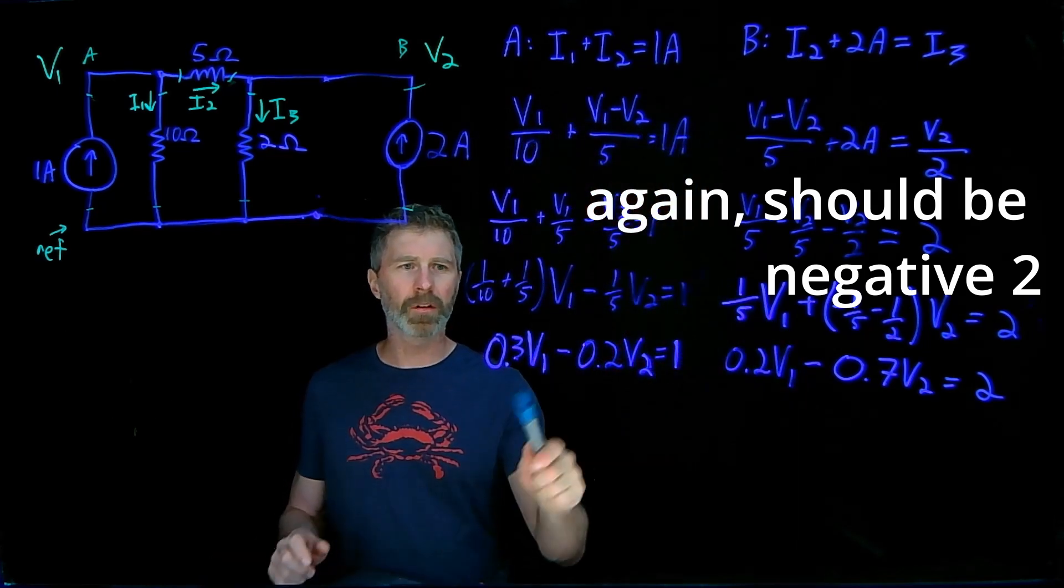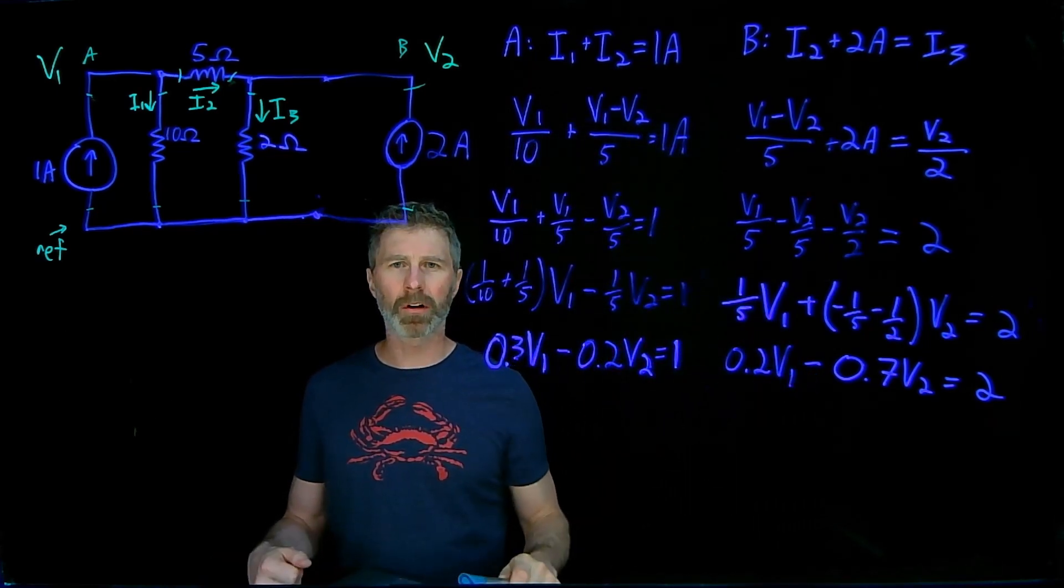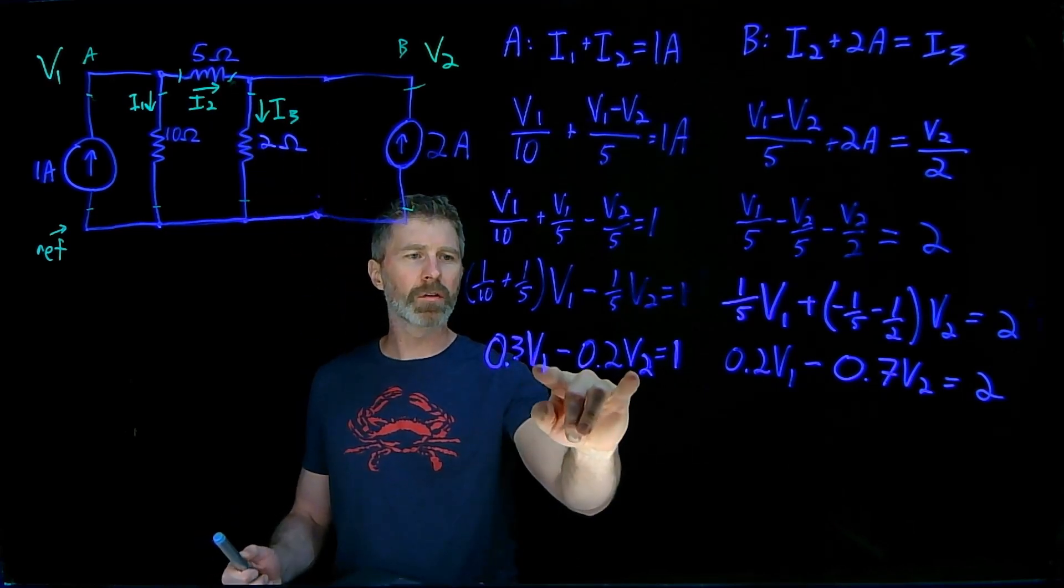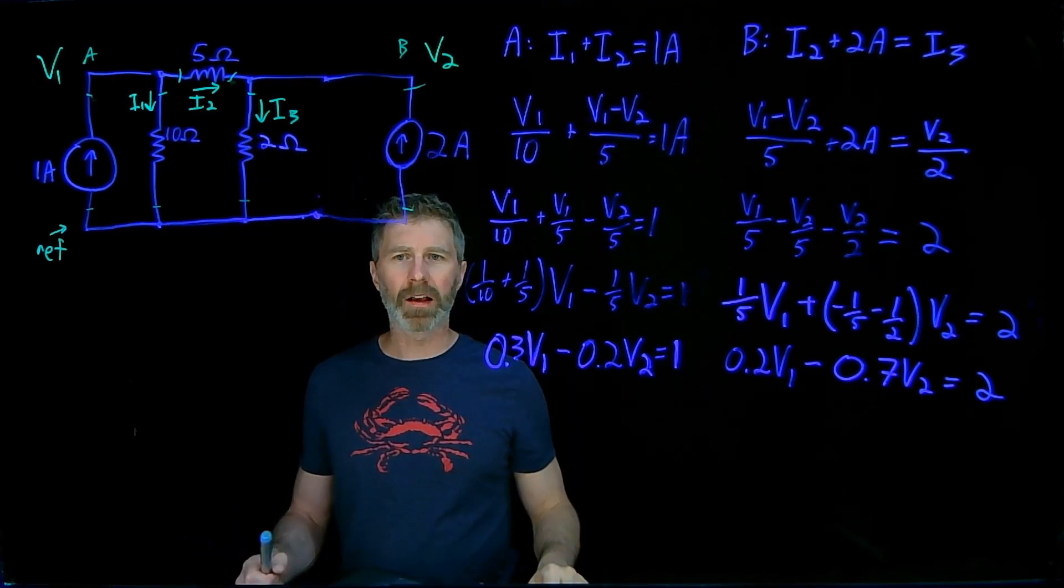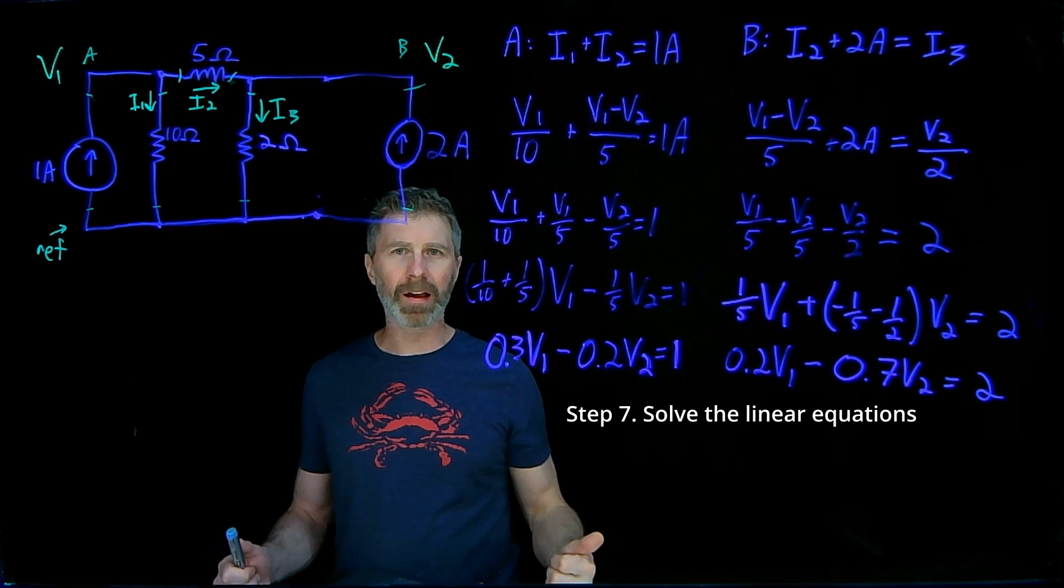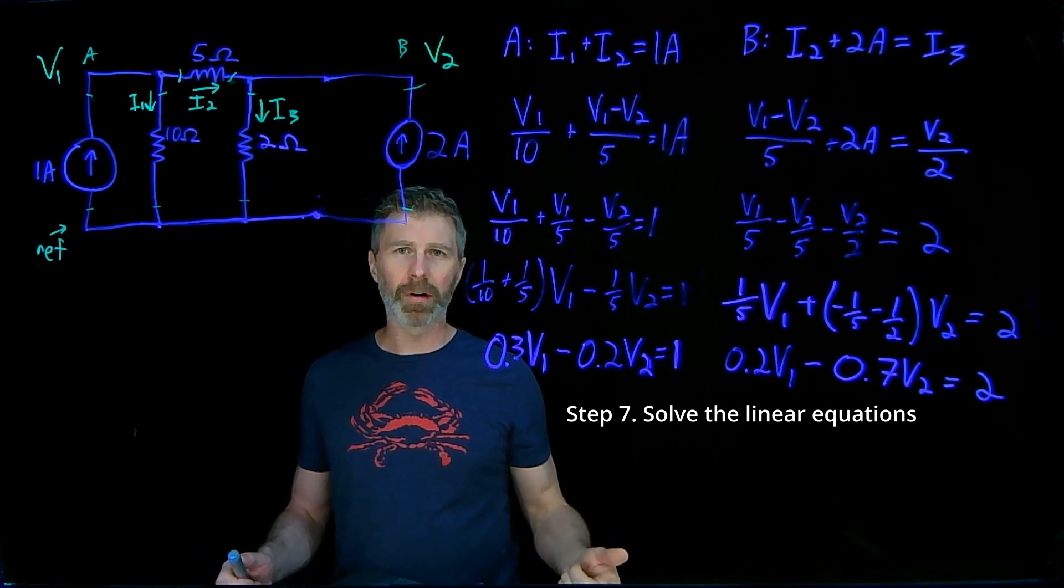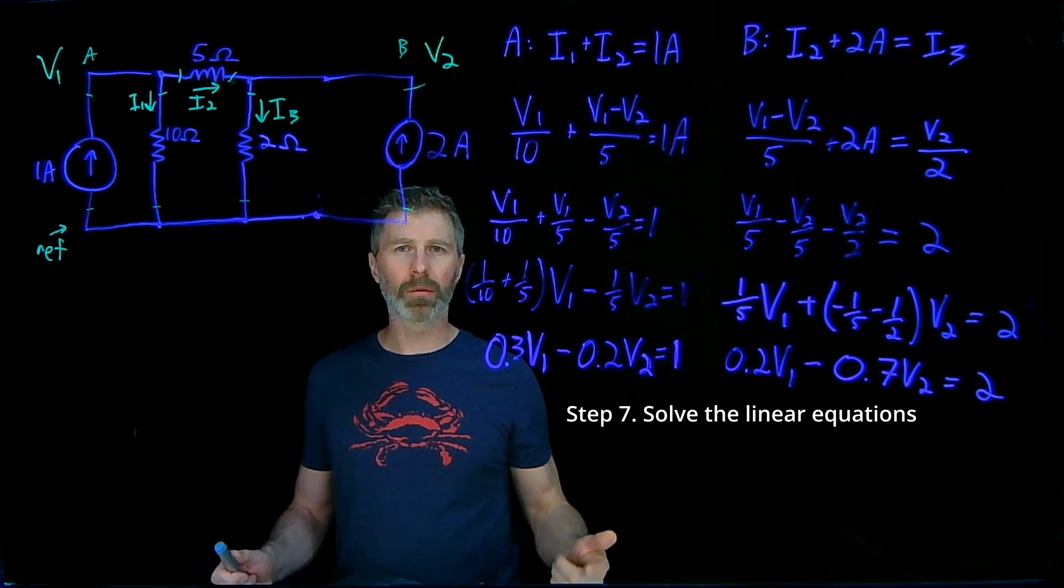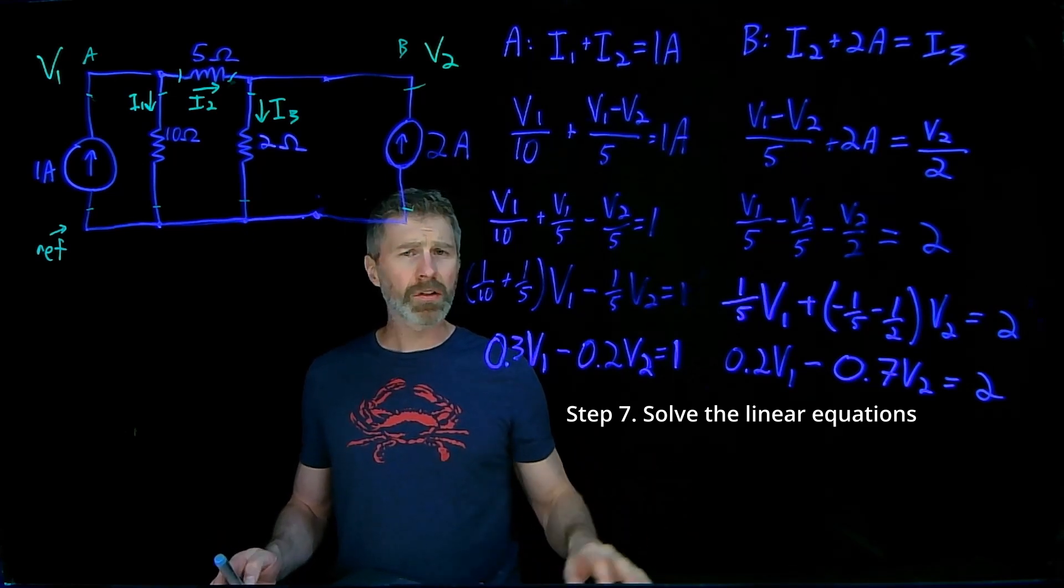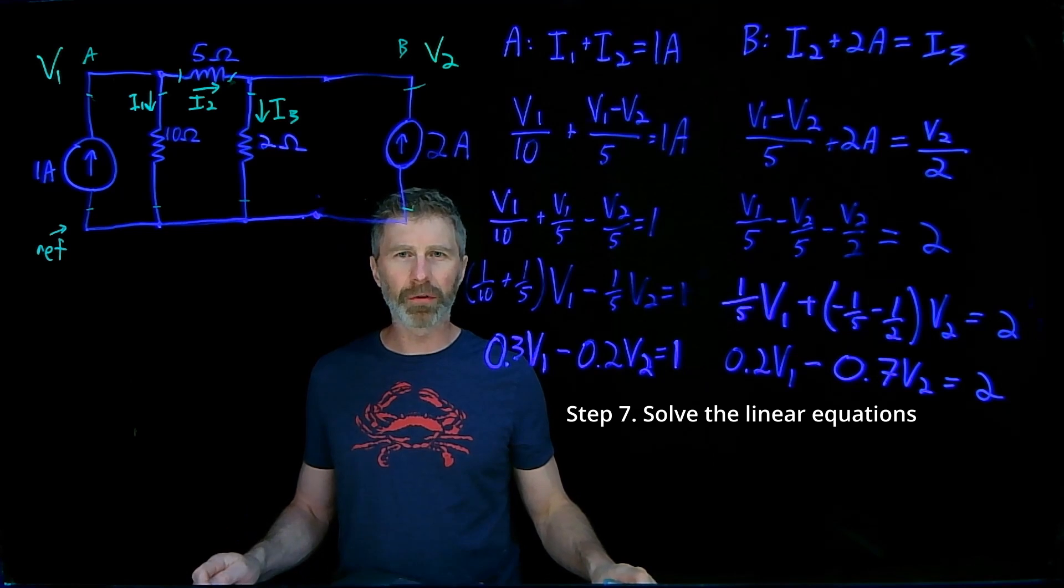Now we're at a point where we have two equations describing what's going on in the circuits, at those particular nodes, in terms of two unknowns. We've got this set of simultaneous equations that we can solve. There's a number of different ways we can do it: by hand with substitution, by hand with Kramer's rule, with our calculator, with MATLAB or some alternative, or Excel. All sorts of options.